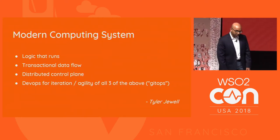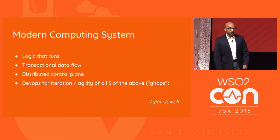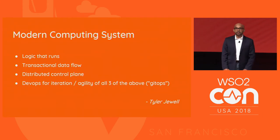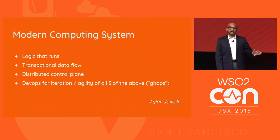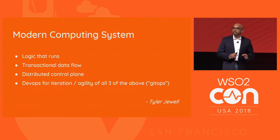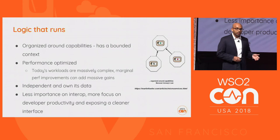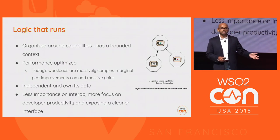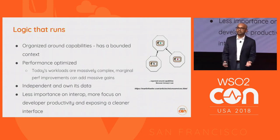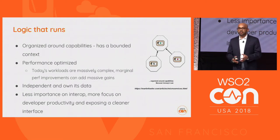We had an architecture session a few weeks back where we wanted to define the modern distributed computer. This is Tyler's definition and we happily agreed on it. What is the modern distributed computer? It's logic that runs, a transactional data flow — or transactional data plane — a distributed control plane, and DevOps iterations and pipelines that tie all three together. Logic that runs means: organize around capabilities, which is what microservices and cell-based architecture are about — organize the cell around capabilities. It has a bounded context, it's about domain-driven design. It has a bounded context with domain-driven design and performance optimized workloads.